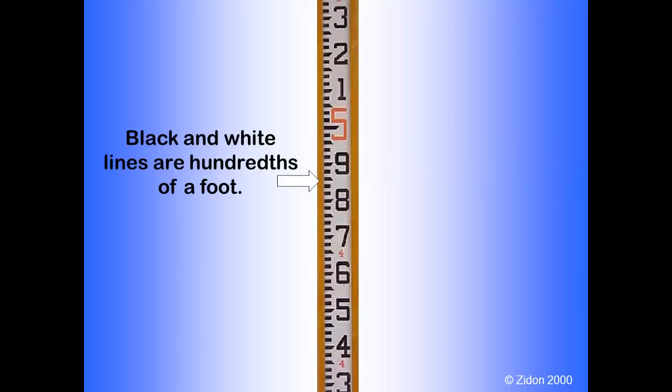There are ten black and white lines between the black numbers. There appear to be only black lines because of the white background, but you must consider the white lines as well as the black lines. These are one hundredths of a foot.